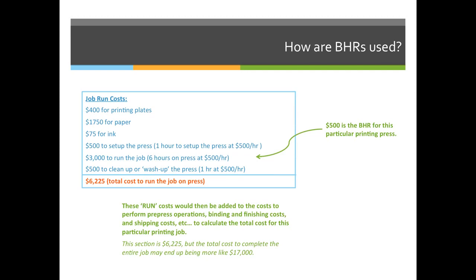To visualize how budgeted hourly rates and other costs are incorporated into the total cost for the run portion of a printing job, we can look at this list. The printing plates might cost $400 — maybe $100 each with four plates. The customer chooses expensive paper at $1,750, and $75 per ink. All of those costs are dependent on the customer, so they're not charged per hour — they're just the total price of whatever they pick.